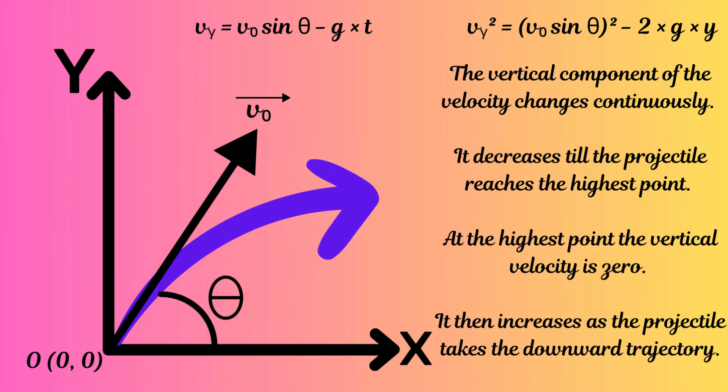Let us now analyze the vertical motion of the projectile. The vertical motion is a little tricky because of the acceleration due to the earth's gravitational pull. Because we take the upward direction as positive, the acceleration acting downwards is denoted by minus g. The vertical component of the velocity vector at any time t is then given by v₀ sine theta minus g times t.